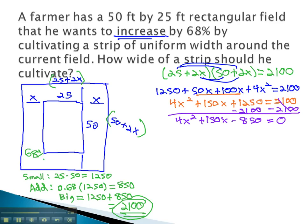We can start solving by factoring out the greatest common factor of 2, to get 2x squared, plus 75x, minus 425, equals 0.